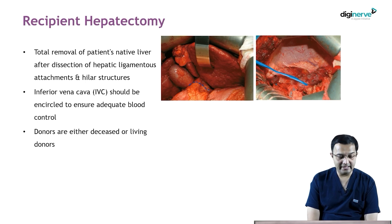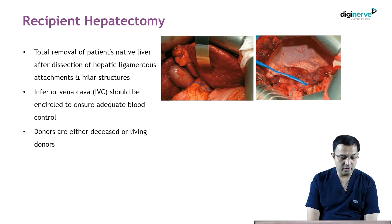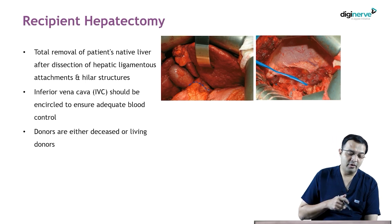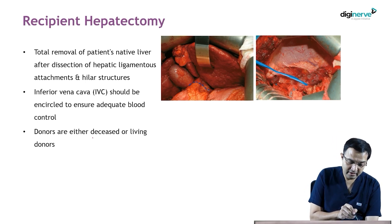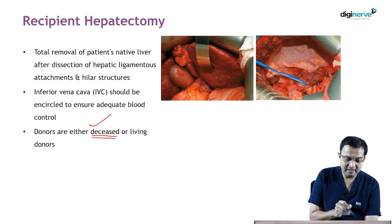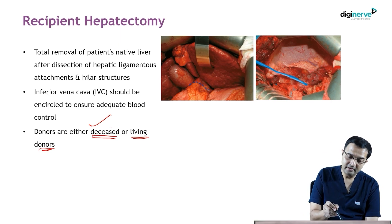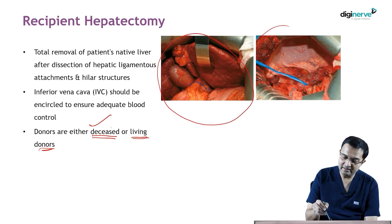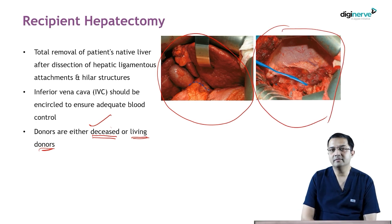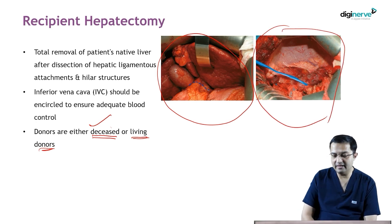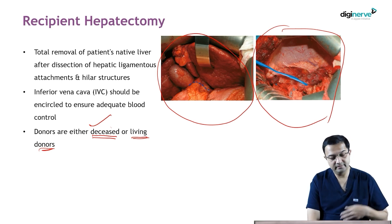The infra-vena cava should be encircled to ensure adequate blood control. The donors from where we are going to get the liver are either deceased or living donors. Here you can appreciate that the recipient hepatectomy has been started; the diseased liver has been removed and the IVC has been looped.